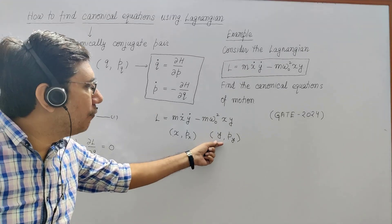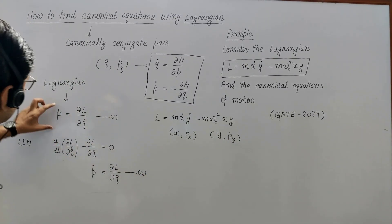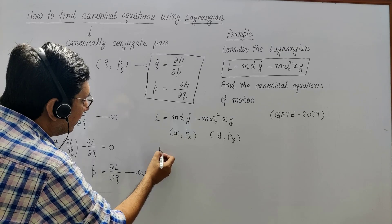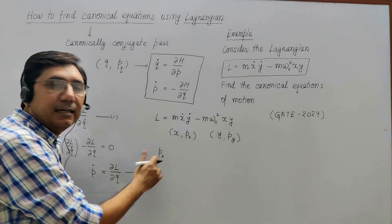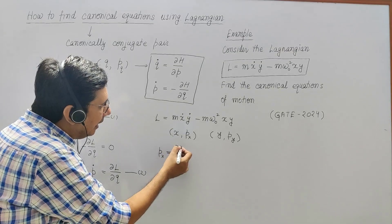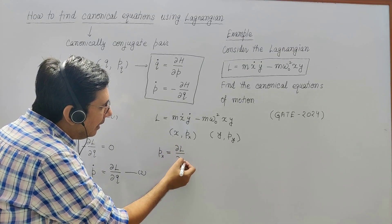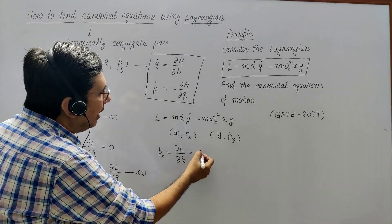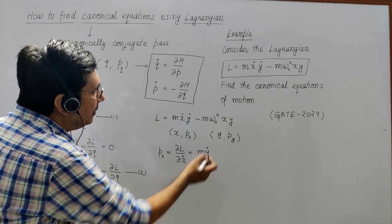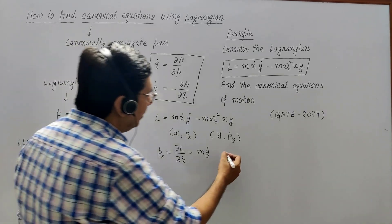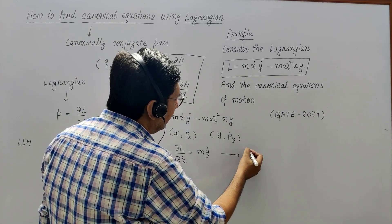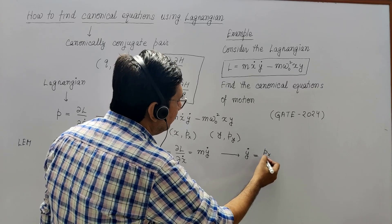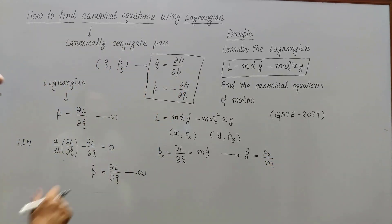We need to find canonical equations for x, px, y, and py. First, use px = ∂L/∂ẋ. Looking at the Lagrangian, ẋ appears in the term mẋẏ, so the partial derivative with respect to ẋ gives px = mẏ. Therefore, ẏ = px/m. This is one of the canonical equations.